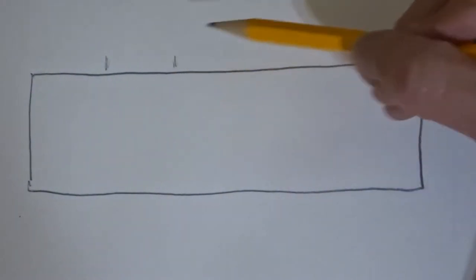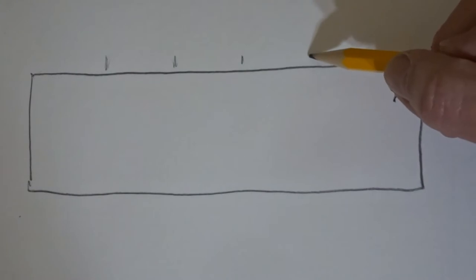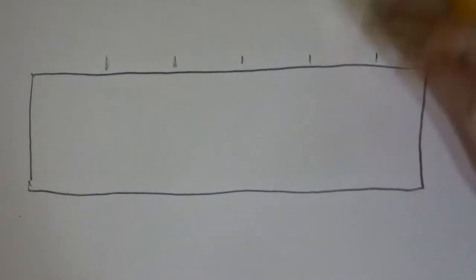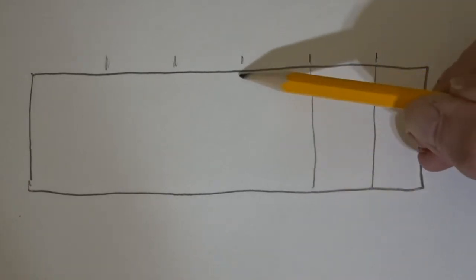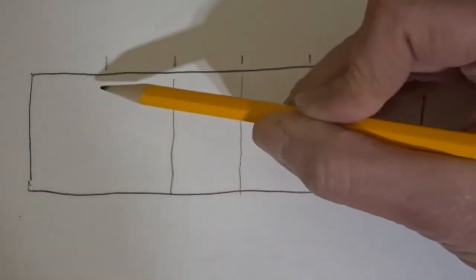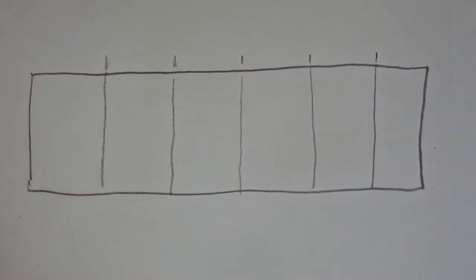Sometimes it's in between. So what we're going to do today is we're going to practice what we call a value scale, some boxes basically that are even steps from light to dark. And then we're going to do a drawing using those values.